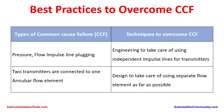Now we will go over the types of common cause failures and the techniques that can be adapted to overcome them. For pressure and flow transmitters with impulse line plugging, the engineering solution is to use independent impulse lines for each transmitter. Also consider diverse technology. If two transmitters are connected to one Annubar flow element, the design should use separate flow elements as far as the piping configuration and plant space allows.